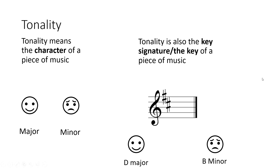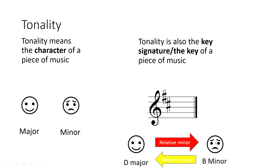Because both keys are related — using the same key signature — we give them names. We would call B minor the relative minor, the negative side of life, and we would call D major the relative major, the more positive side of life.